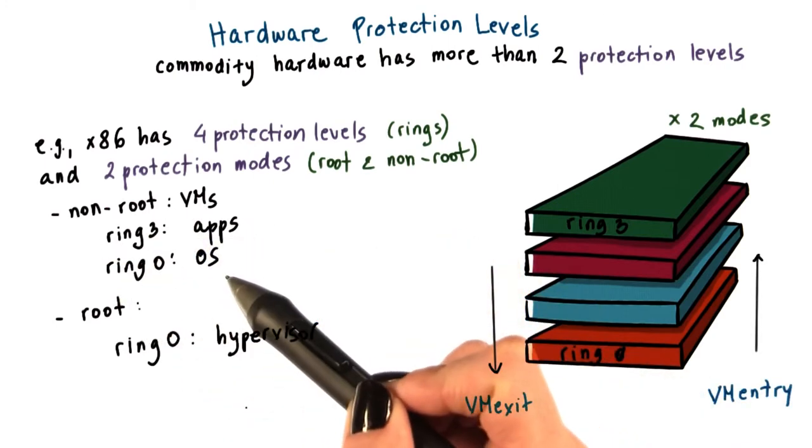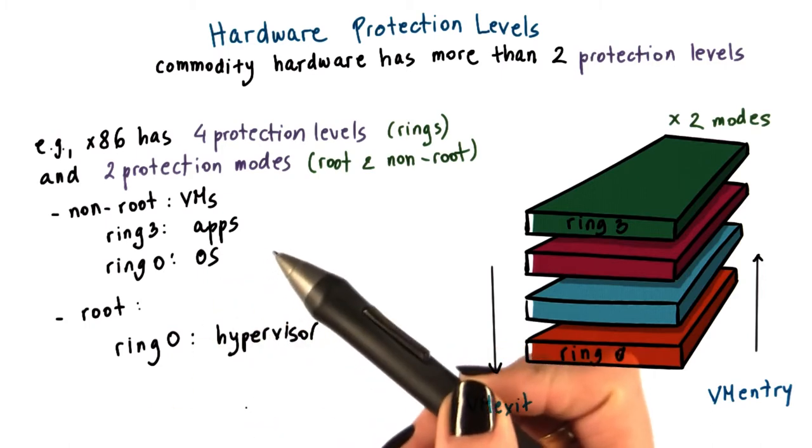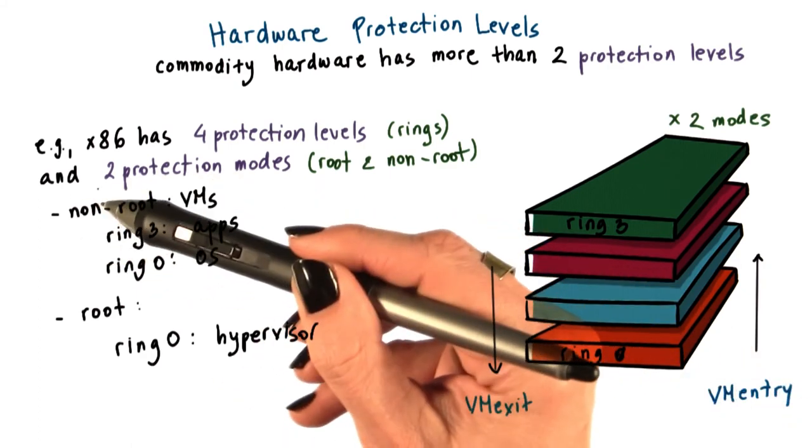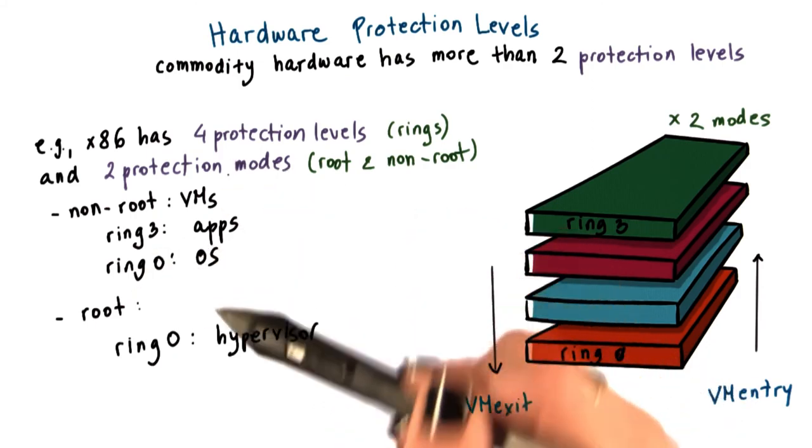Attempts by the guest operating system to perform privileged operations cause traps that are called VM exits, and these trigger a switch to this root mode and pass control to the hypervisor. When the hypervisor completes its operation, it passes control back to the virtual machine by performing a VM entry, which switches the mode into non-root mode to ring zero so that the execution continues.